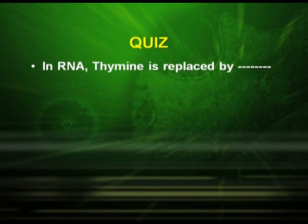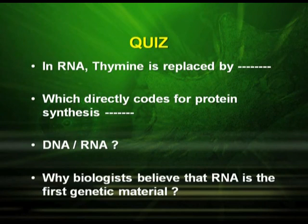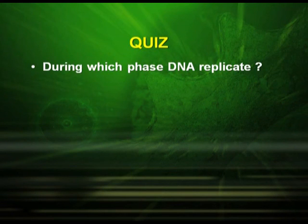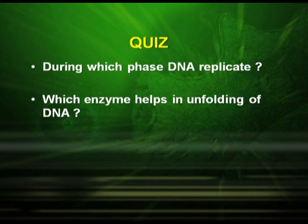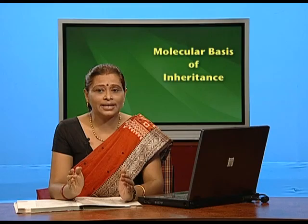Let us have a small quiz. In RNA, thymine is replaced by which base? Which molecule directly codes for protein synthesis — DNA or RNA? Why do biologists believe that RNA is the first genetic material? During which phase does DNA replicate? Which enzyme helps in unfolding of DNA? What do you mean by semi-conservative mode of replication? In the next class we will cover transcription, types of RNAs, and genetic code. Thank you.